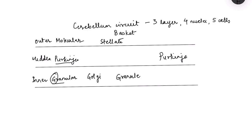Deep within the cerebellum we have the deep cerebellar nuclei, and there are four of them: fastigial nuclei, emboliform nuclei, globose nuclei, and dentate nuclei. These are all present deep within the cerebellum.